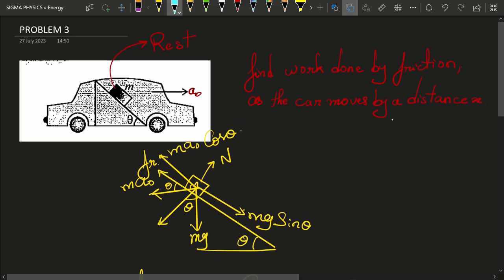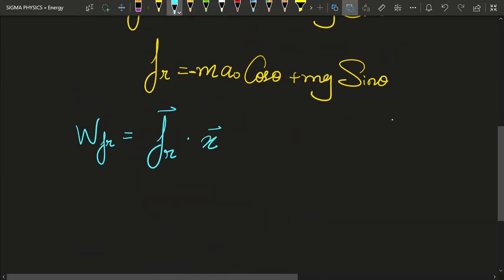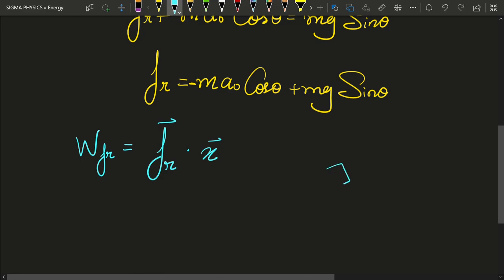If the body moves by a distance x, then its displacement vector is x vector. Now again consider a block of mass m. If the friction acts in this direction, obviously fr, and the block gets displaced in this direction by an amount x.